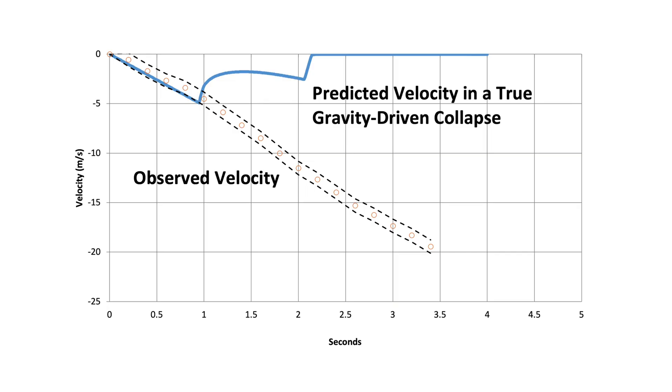They refuse to publish our paper because it refutes what Bazant is saying — it shows he underestimated the column energy absorption, overestimated the mass, and overestimated the kinetic energy. That's how he showed collapse could propagate. In reality, when you do the numbers correctly, even if the North Tower did start to collapse suddenly and uniformly at the 98th floor, it would have arrested within two stories. That is the reality.